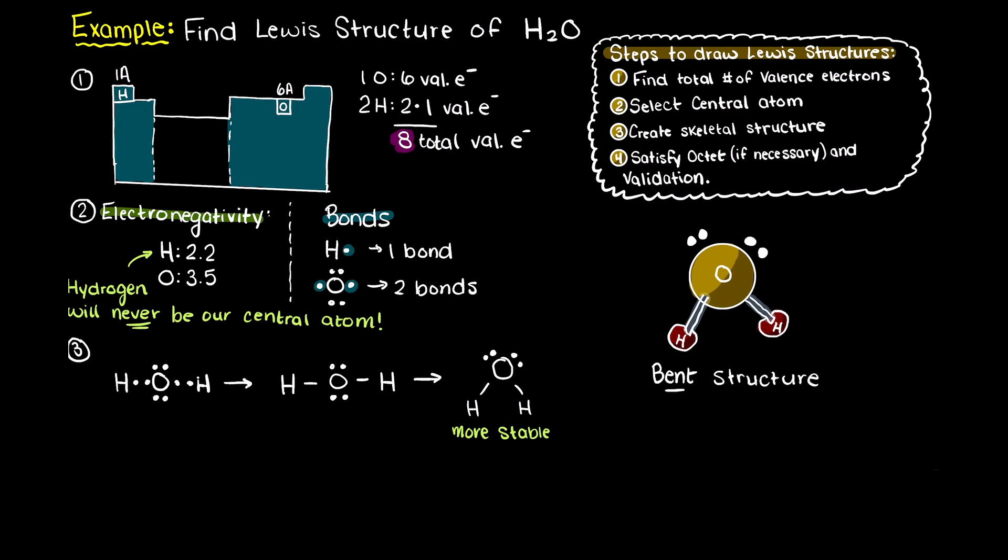To validate our Lewis structure, let's check that the total number of valence electrons present equals what we found in step 1, and that all atoms that need to are satisfied in terms of the octet rule. Counting our valence electrons, we have 2 in our hydrogen-oxygen covalent bond, 4 in oxygen's two lone pair electrons, and another 2 in the hydrogen-oxygen covalent bond. Therefore, we still have 8 valence electrons.